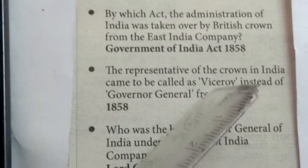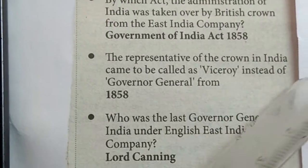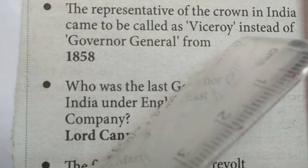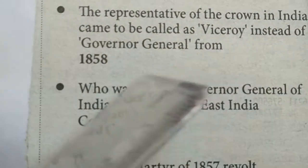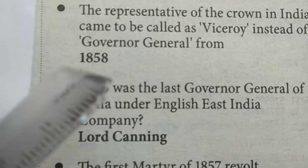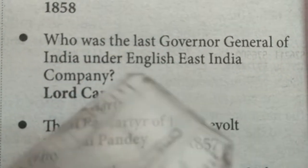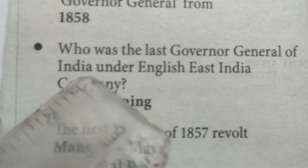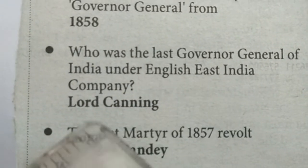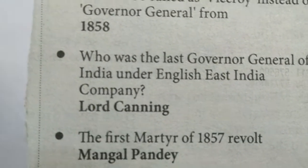The representatives of the Crown in India came to be called Viceroy instead of Governor General from 1858. Who was the last Governor General of India under the English East India Company? Lord Canning.